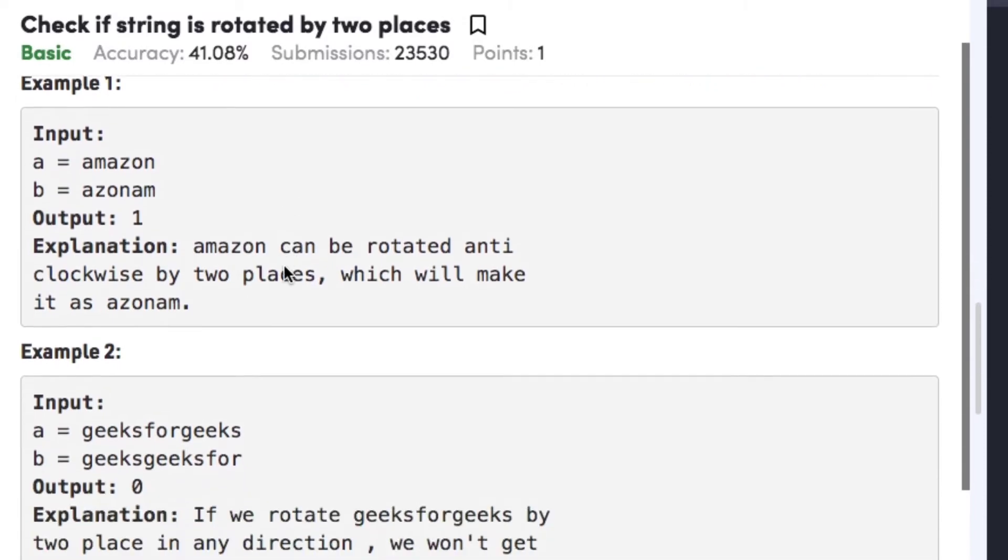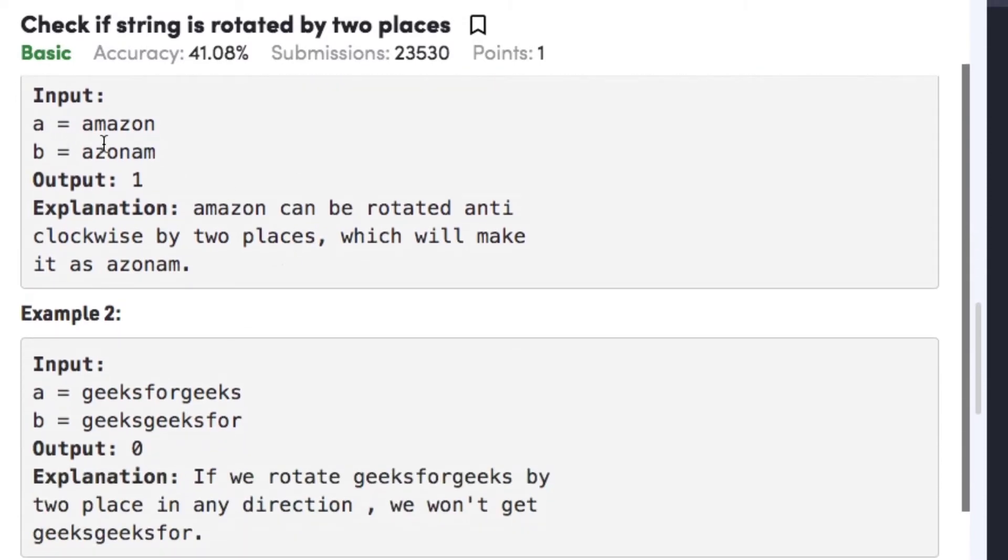Let's consider the examples. In example 1, string A is amazon and string B is azonam. So as we can see that if we rotate the string A in anticlockwise direction then we get azonam. Therefore we return 1 or true.